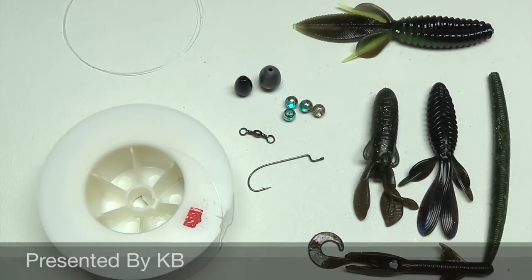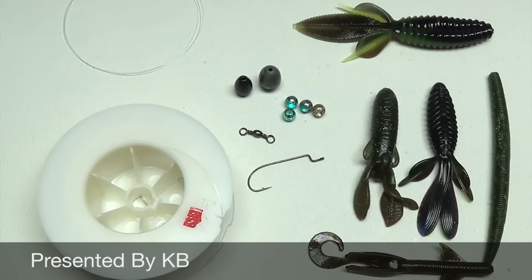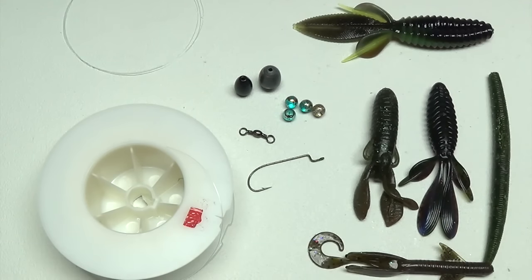Carolina rigging is a great way to fish deeper water. It's kind of the way that it's used the majority of the time, but it certainly can be used in shallow water too.